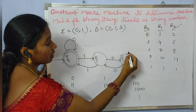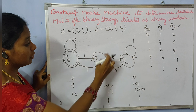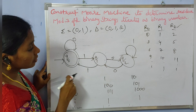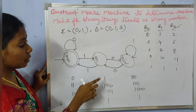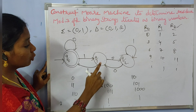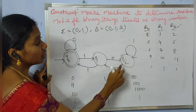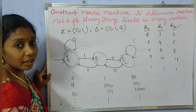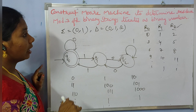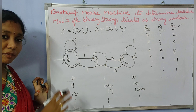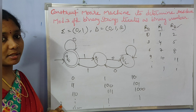For string '101', we are already at Q2, and this is 5. So from Q0, Q1, and Q2, we have transitions on 0 and 1. This completes the required DFA. Now we need to construct the Mealy machine from this DFA.